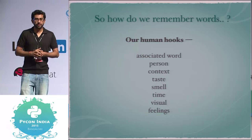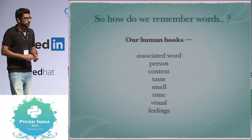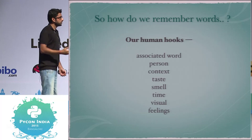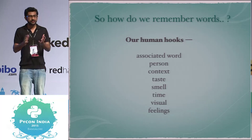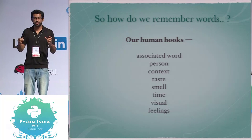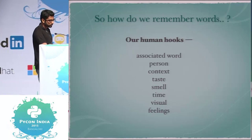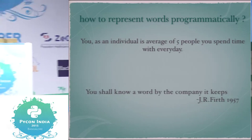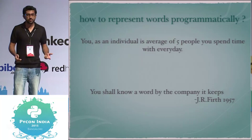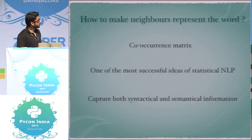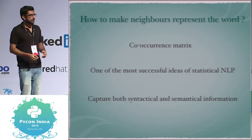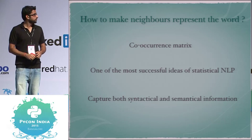Let's get back to where we were. WordNets have some problems, so let's think about how we associate with a word. If I say a word, there are lots of things in the human mind — if it's a noun, we associate it with a person, create a context around it: taste, smell, time, visual, or feelings. There's a quote: you are an average of the five people around you. Similarly in NLP: 'you shall know a word by the company it keeps.' That's the basis for creating context. We can create co-occurrence matrices — one of the most successful ideas in NLP.